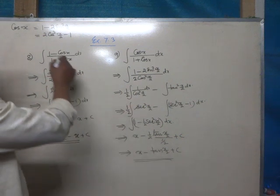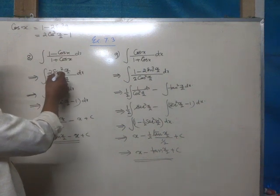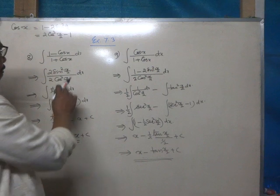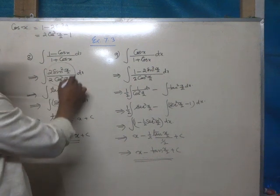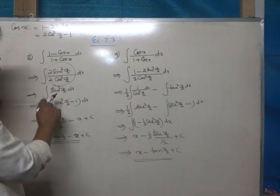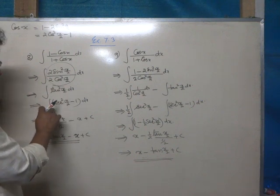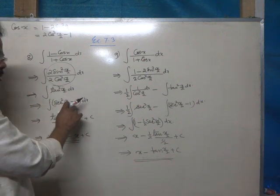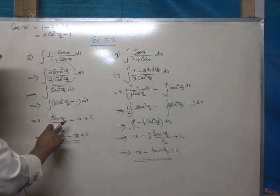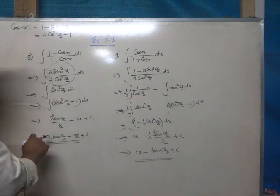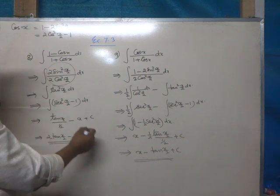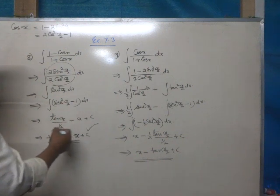Once again, 1 - cos x is written as 2sin²(x/2) and 1 + cos x as 2cos²(x/2). Then 2sin²(x/2) divided by 2cos²(x/2) is tan²(x/2), and tan²(x/2) is expressed as sec²(x/2) - 1. So the integral of sec²(x/2) is tan(x/2) divided by half, that is 2tan(x/2), and the integral of dx equals x, giving minus x.